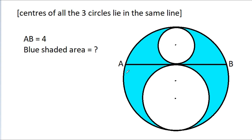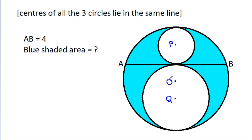In this video, we have given that AB is 4, and we have to find the blue area. Suppose the center of the first smaller circle is P, the center of the second smaller circle is Q, and the center of the bigger circle is O.